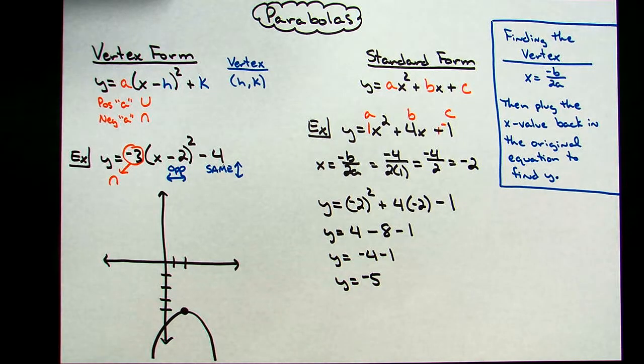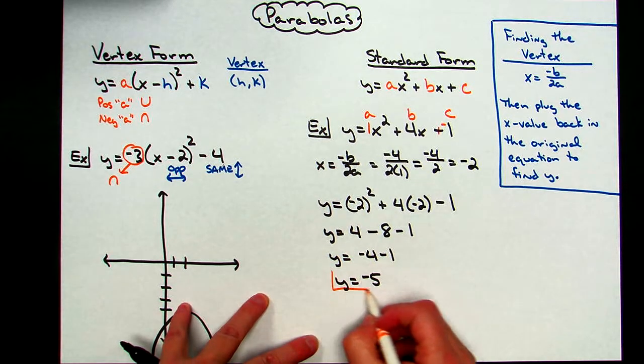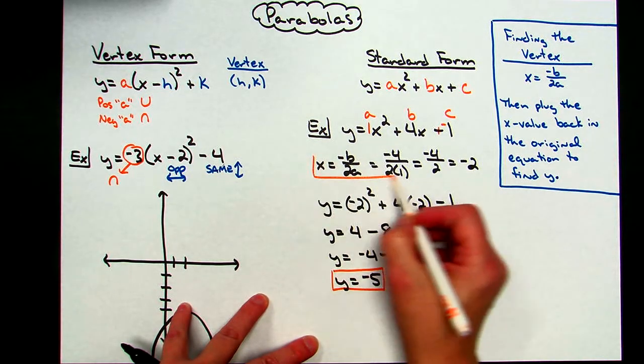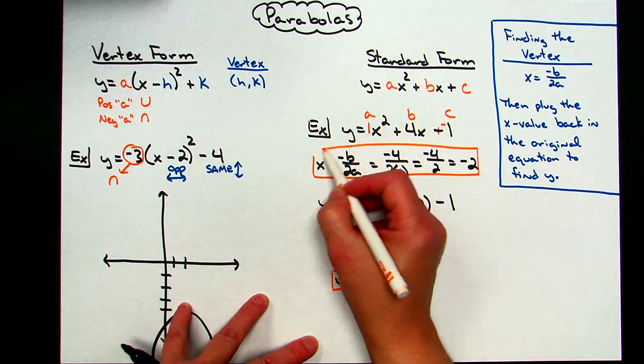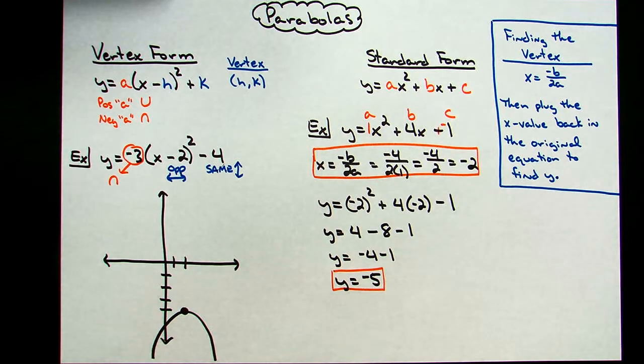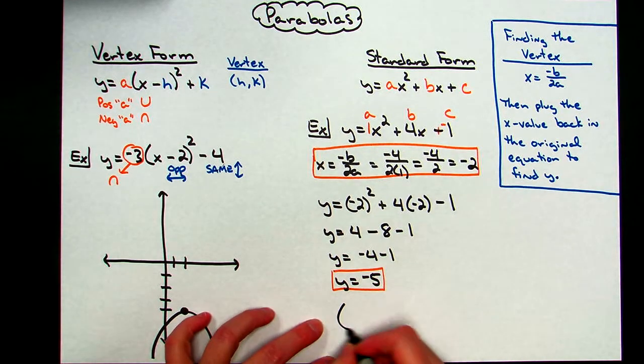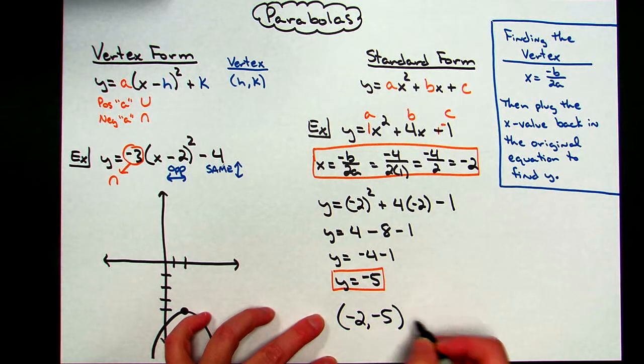With those two values, I've got a y of -5 and I've got an x of -2, so I have now, after all of that work, finally found my vertex to this parabola. It's going to sit at (-2, -5).